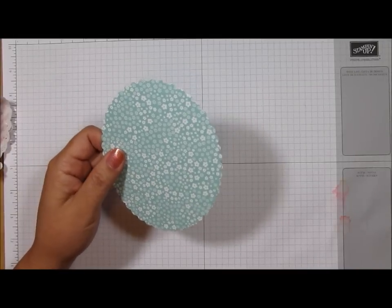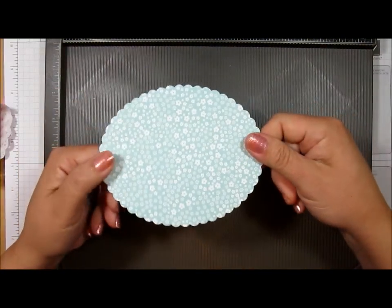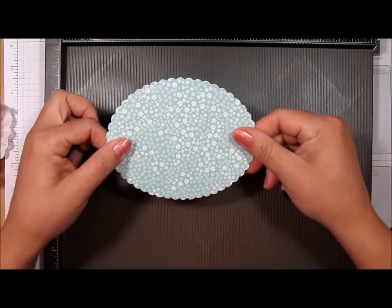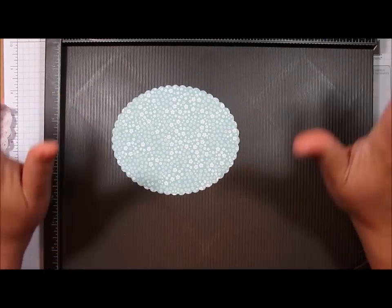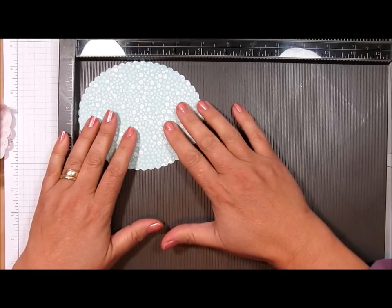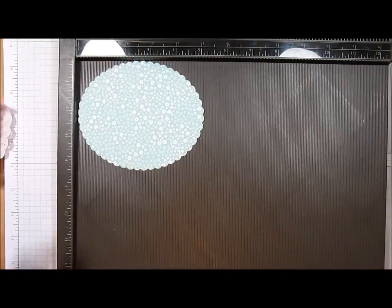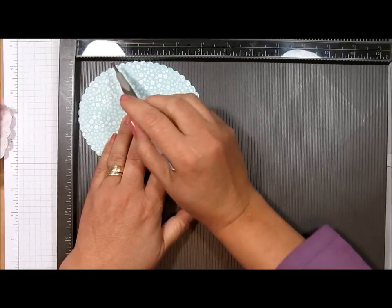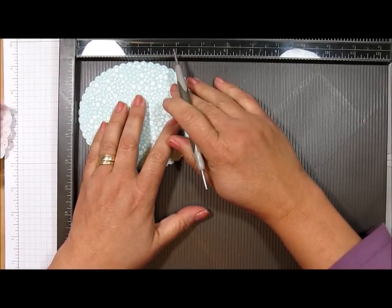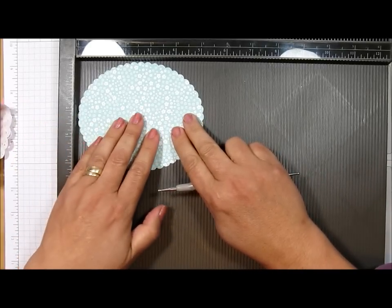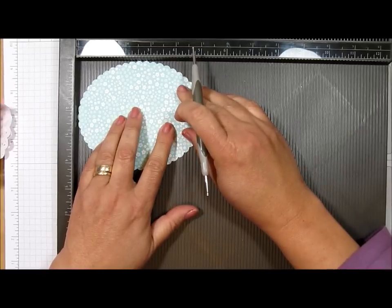Now you're going to bring in your Simply Scored scoreboard. Now, I don't want you to go crazy, but my die is not symmetrical. It's not perfectly symmetrical. Maybe you found that too. So don't worry about it, it'll be okay. What you want to do is just line this up as straight as you can because you're going to be needing to make some score lines at the 1.25 inch all the way around.